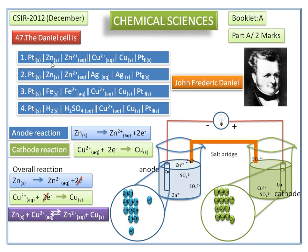Now we check the answer. In the first option, the zinc rod is dipped into the Zn²⁺ ion solution, and the copper rod is dipped into the Cu²⁺ ion solution. These two half cells are connected by a salt bridge, which is represented by a double vertical line. So the correct representation of the Daniell cell is the first option.